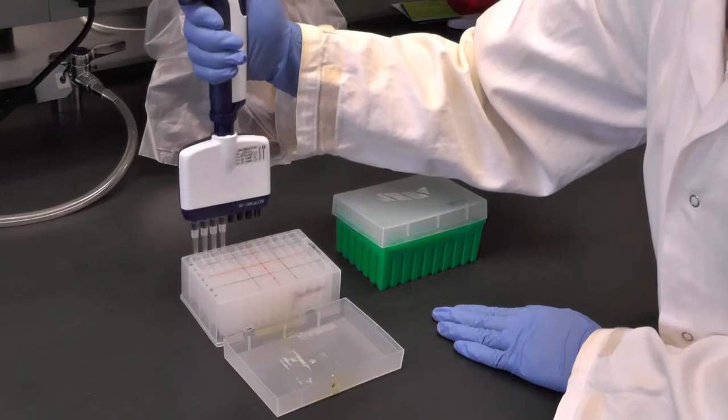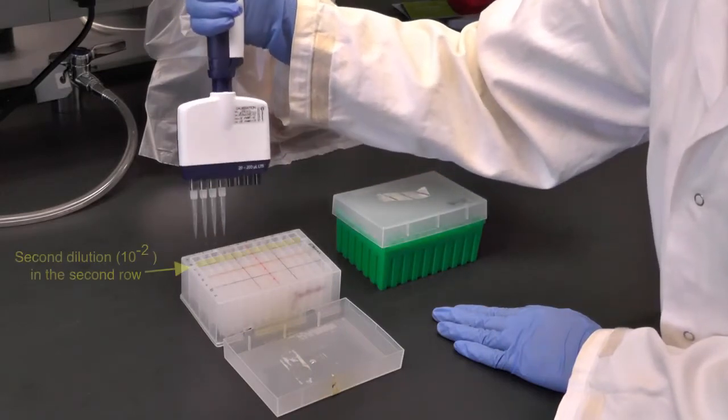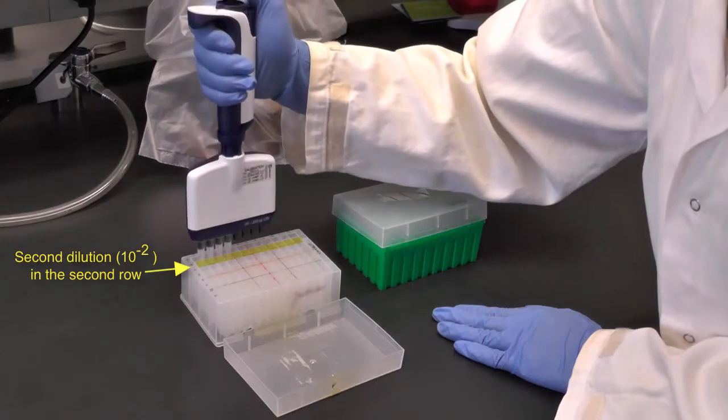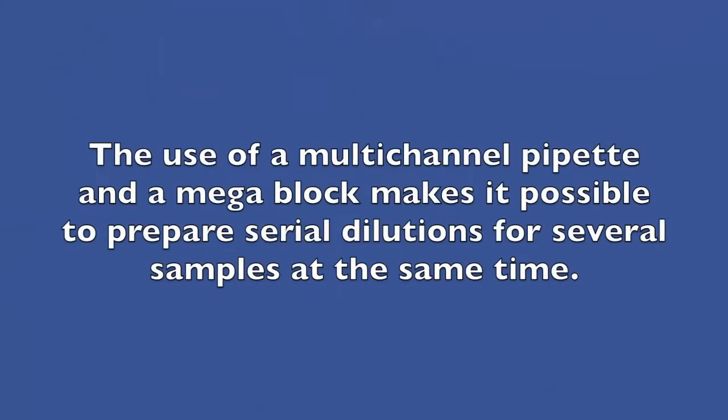Then with empty tips, draw up the amount of solution you need from the first dilution and transfer it into the second row of wells where you want to make the second dilution. Here, the use of a multi-channel pipette and a megablock makes it possible to prepare serial dilutions for several samples at the same time.